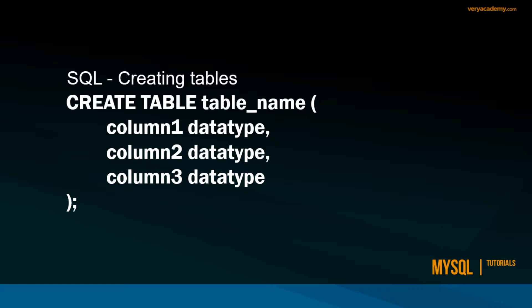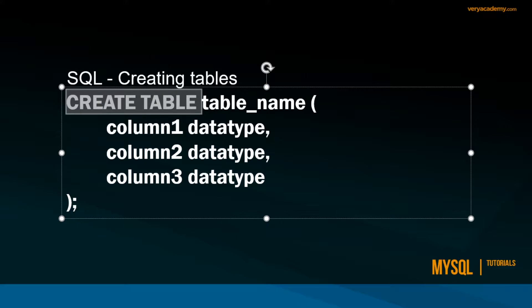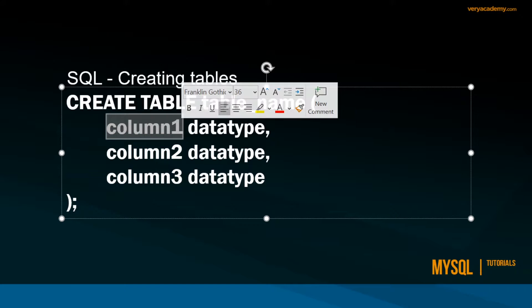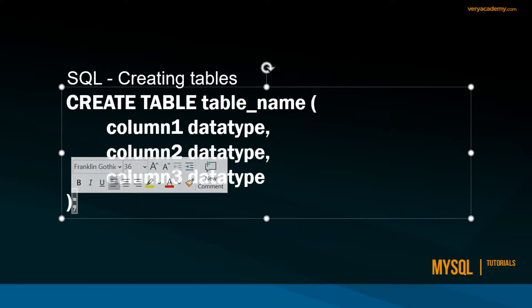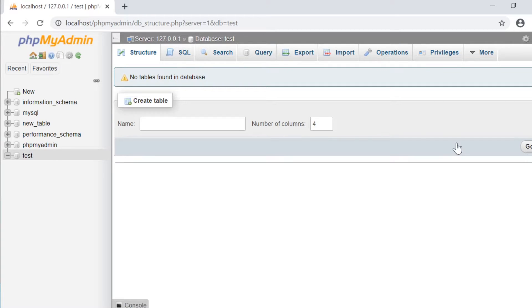So far we've developed a database. A database contains tables — a database is essentially just a container for tables. To build tables inside of a database using SQL is fairly straightforward. We use the SQL command CREATE TABLE, then we name the table, and then open and close parentheses. Inside, we define the columns we want to build. Each column has a name and a data type, separated by commas, and the whole statement ends with a semicolon.